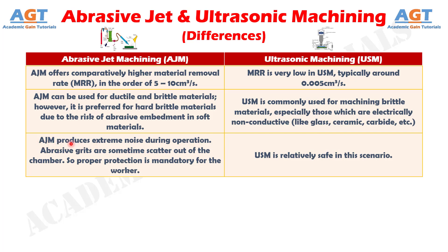Difference number 7: Abrasive jet machining produces extreme noise during operation, and abrasive grits sometimes scatter out of the chamber, so proper protection is mandatory for the worker. Whereas, ultrasonic machining is relatively safe in this scenario.